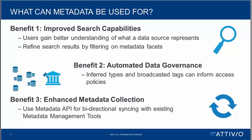The second benefit is automating data governance. Inferred types and broadcasted tags can help inform data governance policies and access policies, because all of that metadata can be accessed via the metadata API. The third benefit is enhanced metadata collection. You might have an existing metadata management tool or repository, and all of that metadata can be passed on to the sources within the catalog via the API. And as users add tags of their own, those tags can be pulled into the existing metadata management tool as well.